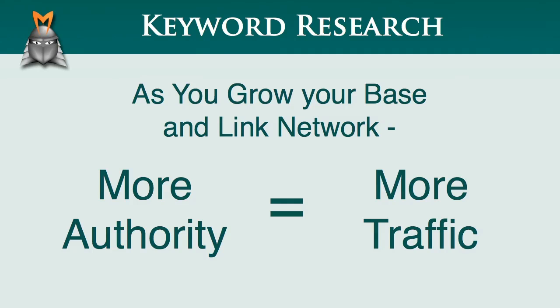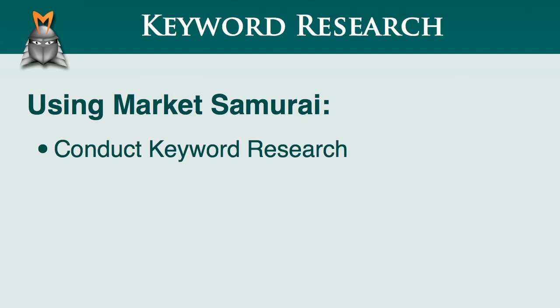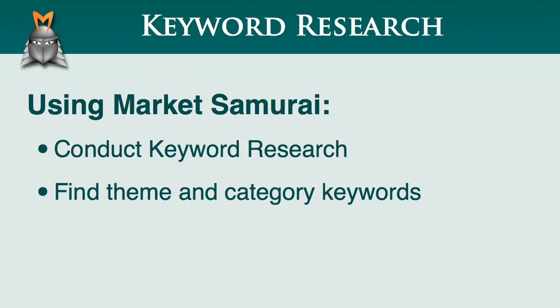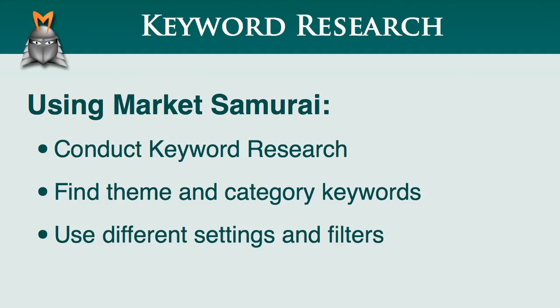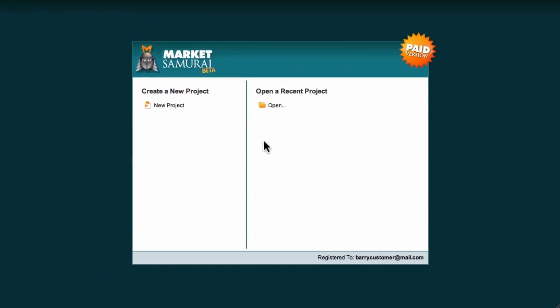So now that you understand what long-tail derivative keywords and semantic long-tail keywords are, let's take a look at how to use Market Samurai to find these important keyword phrases. What we need to do is to conduct another round of keyword research for our theme keyword and each of our category keywords. This time, however, we'll be using different search settings and different filters in order to find the long-tail keyword phrases that we're looking for. So let's take a look at the sleeping bag example from start to finish.